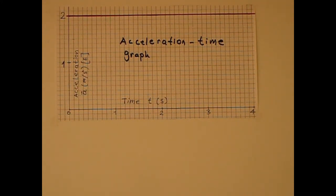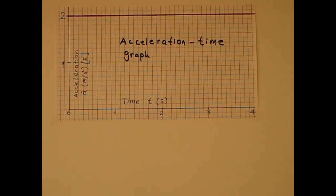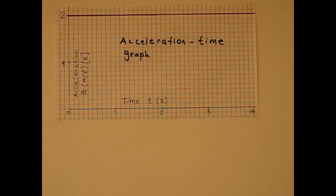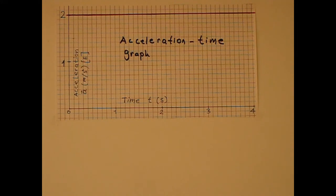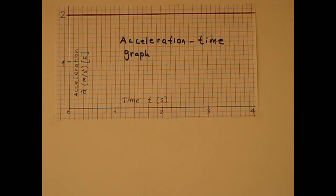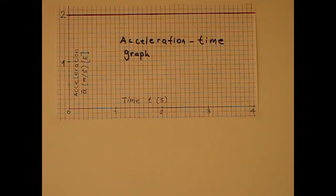In the first part of the video, first a position-time graph was created, second a velocity-time graph, and third an acceleration-time graph. But in this video, the acceleration-time graph is given, and we will create the velocity-time graph and then the position-time graph.